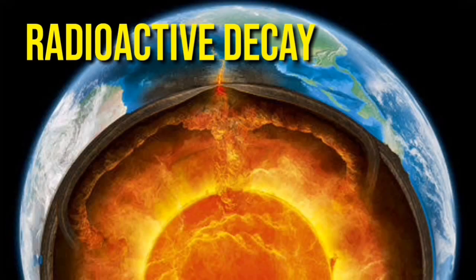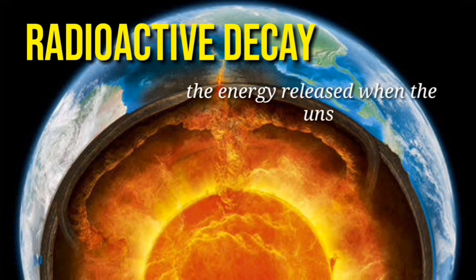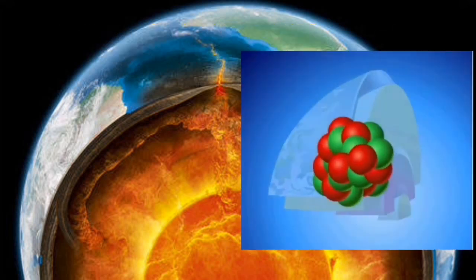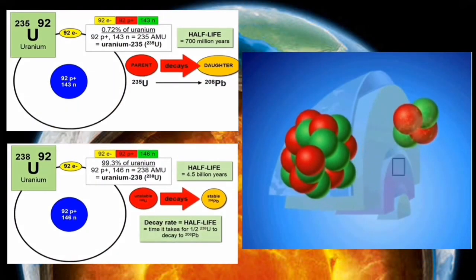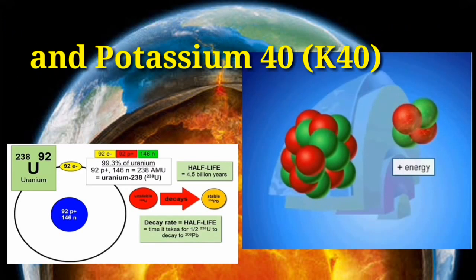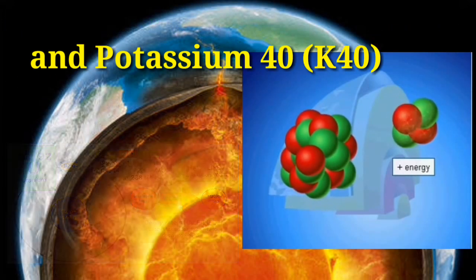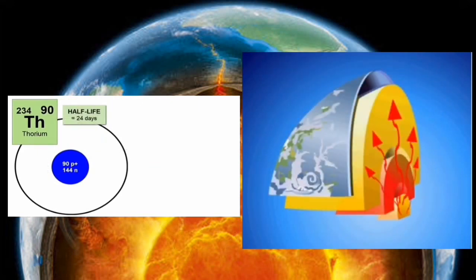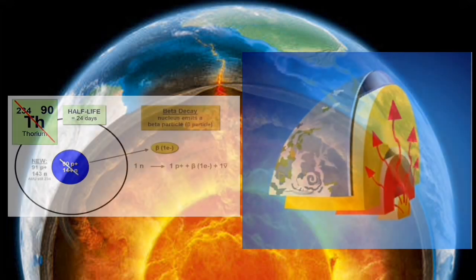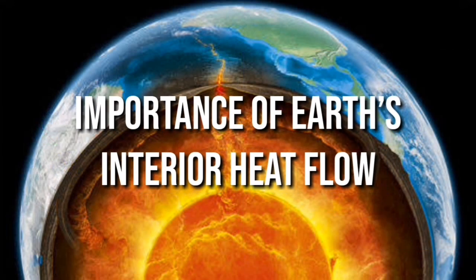A major source of heat is radioactivity, or radioactive decay. This refers to the energy released when unstable atoms decay. The radioactive isotopes of uranium-235, uranium-238, and thorium-232 in Earth's mantle are the primary sources. Radioactive decay produces energy in the form of heat, and this heat generated reaches the surface of the Earth. Now let's discuss the importance of Earth's interior heat flow.